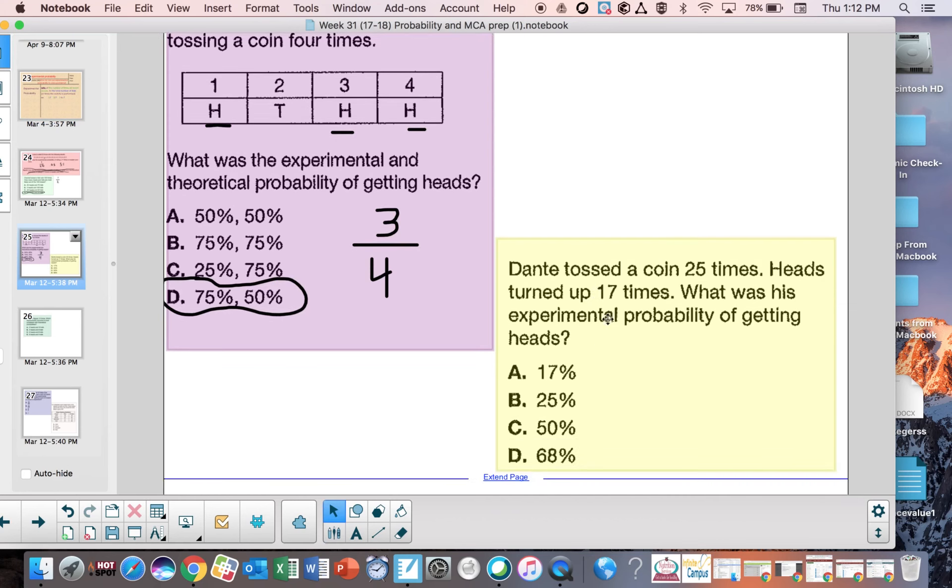Dante tossed a coin 25 times. Heads turned up 17 times. What was his experimental probability of getting heads? Well, he got heads 17 times. That's what happened. That was the result of getting heads out of a total of 25. So they try to trick you here by putting 17%, but just because you got heads 17 times doesn't mean that's the percent. It was out of 25 times. So in order to figure that out, we have to go 17 divided by 25, change it to a decimal, and then a percent, and that would be D.